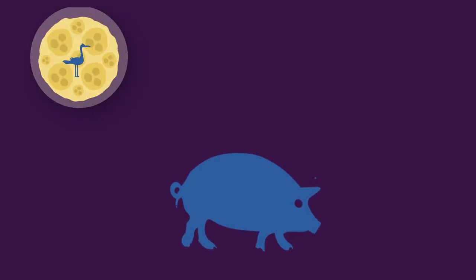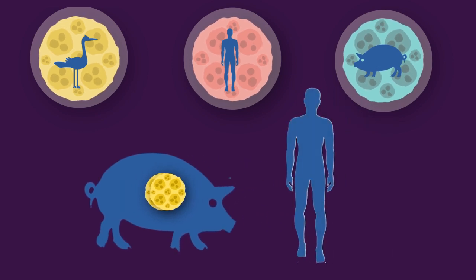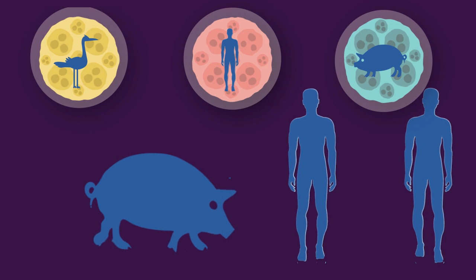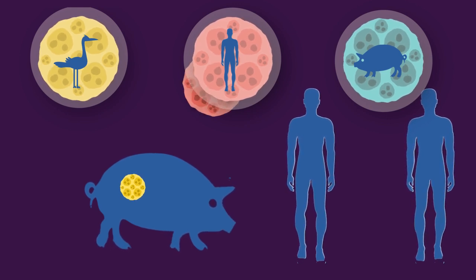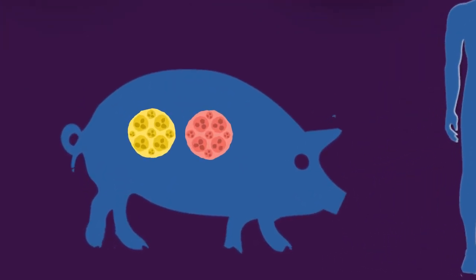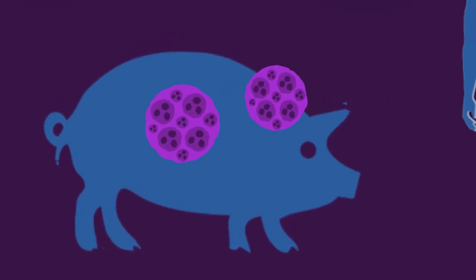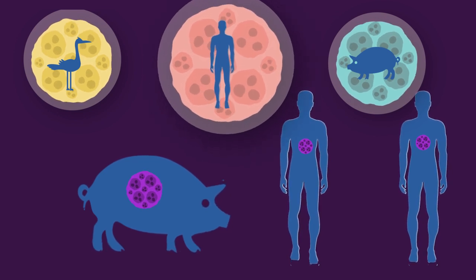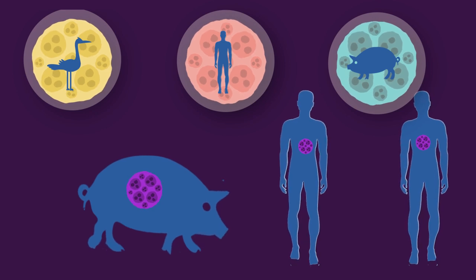To understand how swine flu transferred from human to human, we need to look at virus infection in pigs. Swine can be infected by bird flu strain, human flu strain, and pig flu strain. Most swine flu contains only one strain of virus that transfers to humans but cannot transfer further from human to human. But during the H1N1 outbreak, a particular pig infected by a bird strain of influenza A also got infected by a human strain at the same time. These two strains mixed, and a new strain of influenza A was born — one capable of spreading from human to human, because the newly born virus carried a human strain of influenza A.